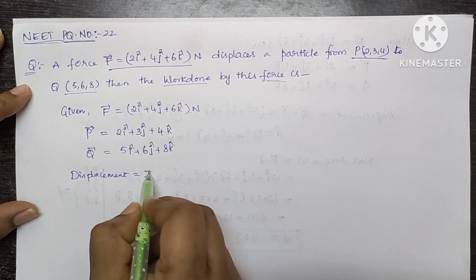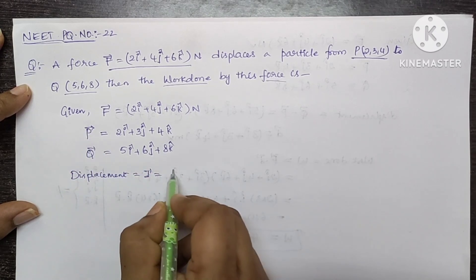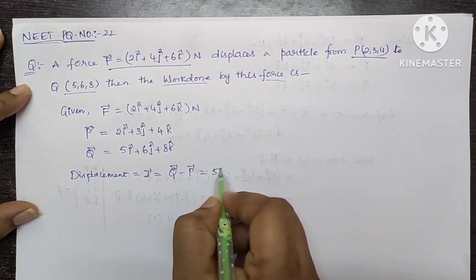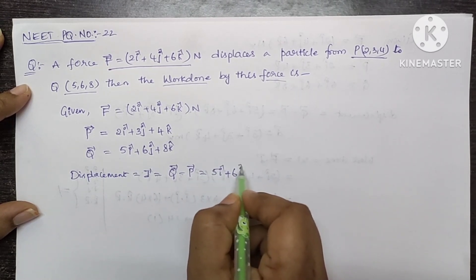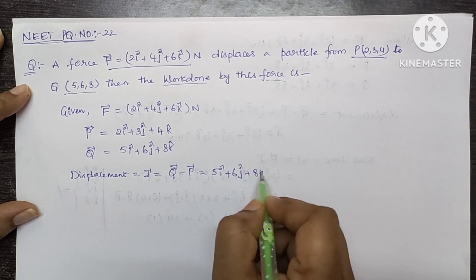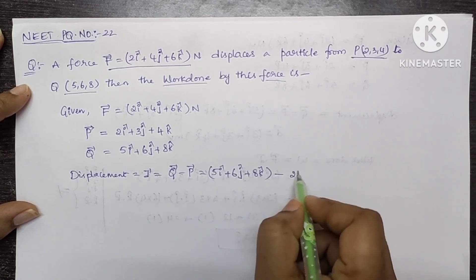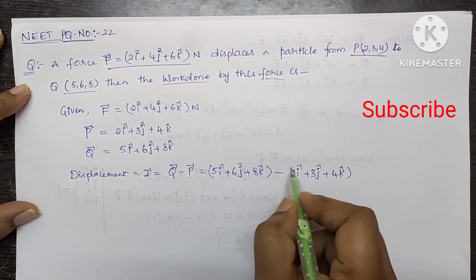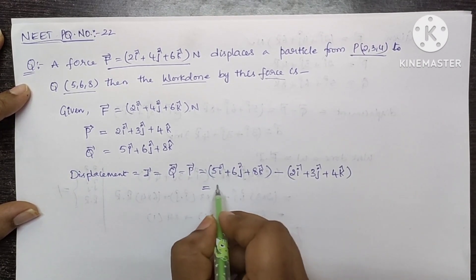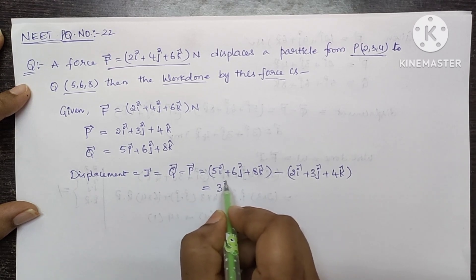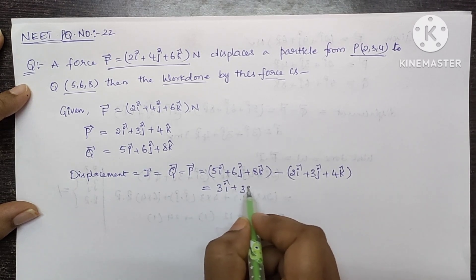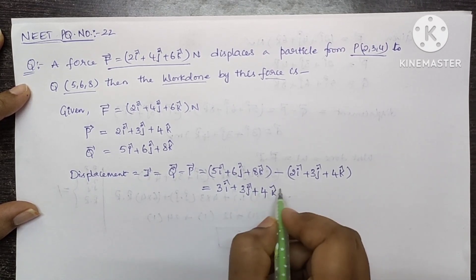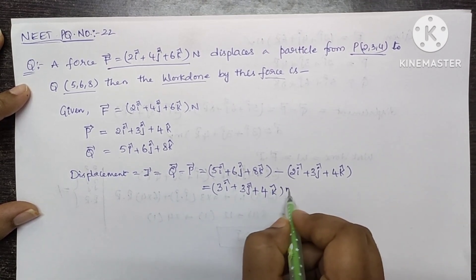Displacement is equal to final minus initial. So Q minus P, which is equal to (5i cap plus 6j cap plus 8k cap) minus (2i cap plus 3j cap plus 4k cap), which gives the displacement vector. This is the displacement.